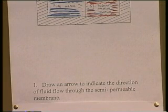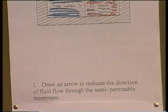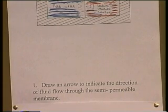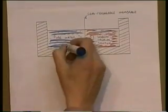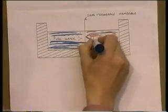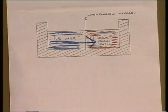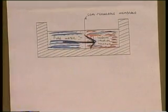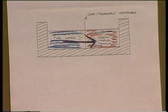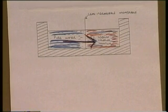...of the fluid flow. Fluid would go from the pure water side through to the side with more sodium chloride on it. The name given to this process is osmosis.